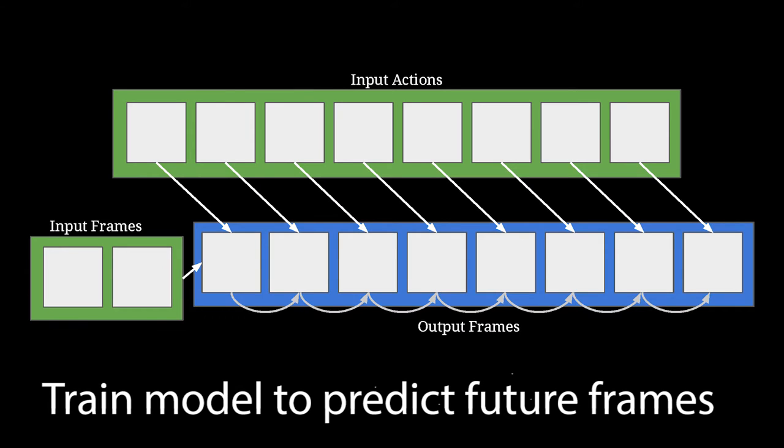We then develop a video prediction model capable of generating a sequence of 8 frames conditioned on the first two frames of the video and the future 8 actions of the robot.